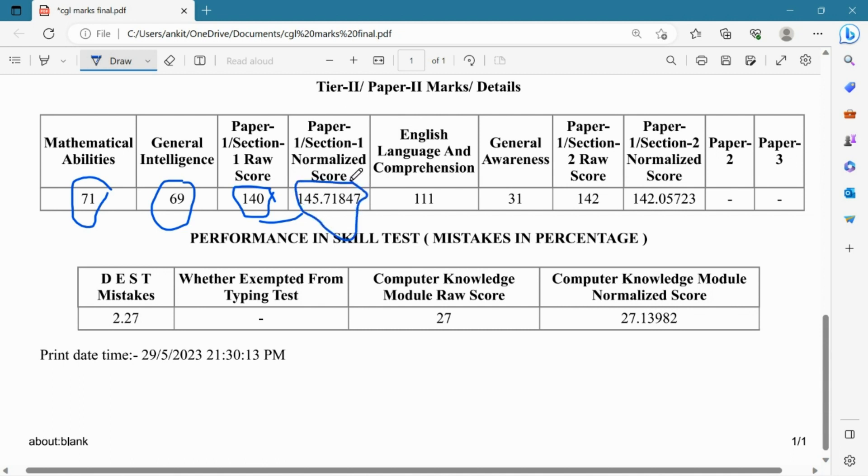In English I've got 111 out of 135 marks, and in general awareness which is GS I've got 31 marks out of 75. So section 2 total is 142, and after normalization since section 2 didn't have normalization, the total is 142.05723.